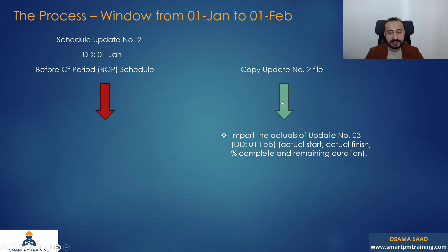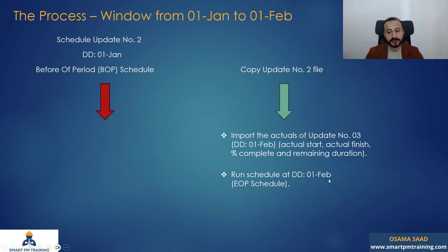After I import the actuals, my data date is still the same — 1st of January. So after that, I will run the schedule at data date 1st of February, after I took all actuals and imported them from update number three. I will run the schedule at 1st of February and this will be my end of period.